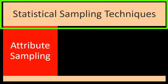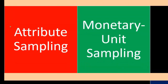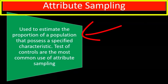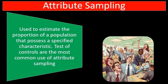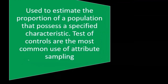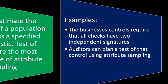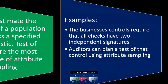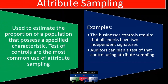The two statistical sampling techniques are attribute sampling, monetary unit sampling, and classical variables sampling. Attribute sampling is used to estimate the proportion of a population that possesses a specified characteristic. Tests of controls are the most common use of attribute sampling. For example, if a business's controls require that all checks have two independent signatures, auditors can plan a test of that control using attribute sampling to see whether that control is indeed in place.